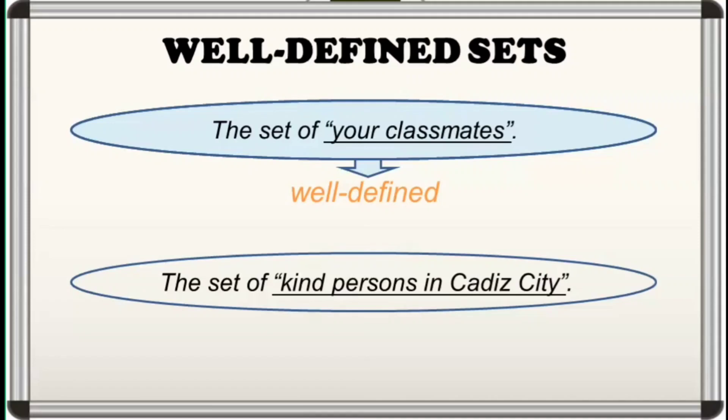Maaari kong sabihin na siya ay isang kind person, pero maaaring sa iyo ay hindi. It now becomes difficult to determine whether that person really belongs to the set or not. So, the set is not well-defined.